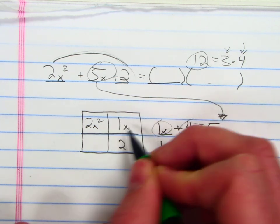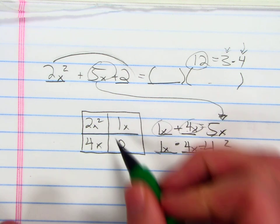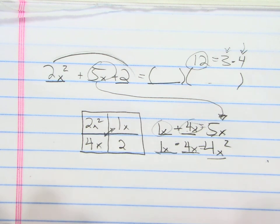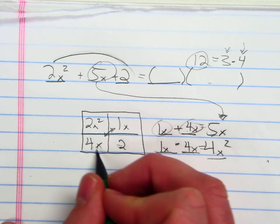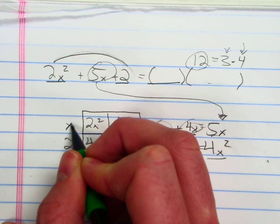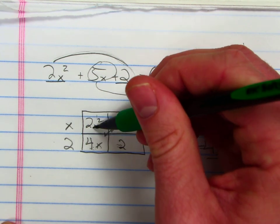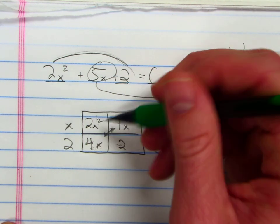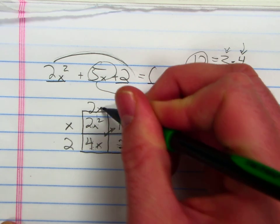It doesn't matter which one goes where. Those are interchangeable. Now I just want to factor my GCF of these two terms out to the front. The GCF of those is 2. The GCF of those is x. And then I want to factor up. The GCF of these two terms is going to be 2x, and the GCF of those two terms is going to be 1.